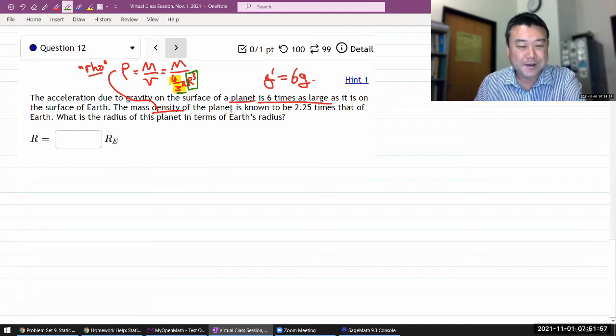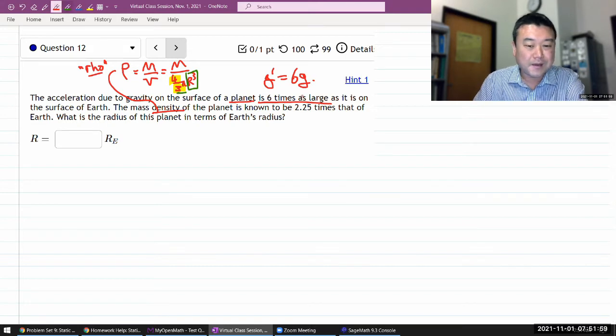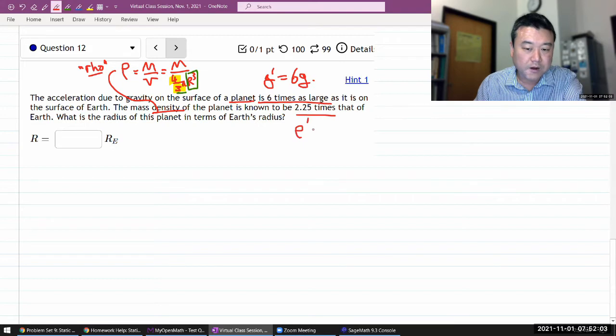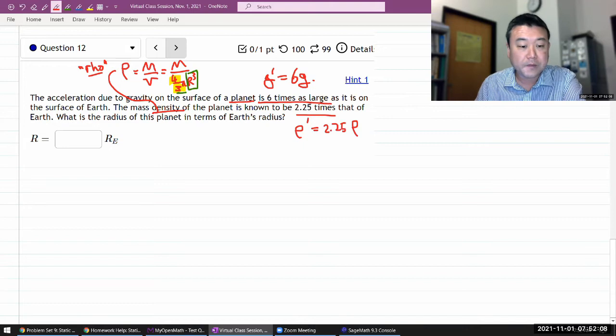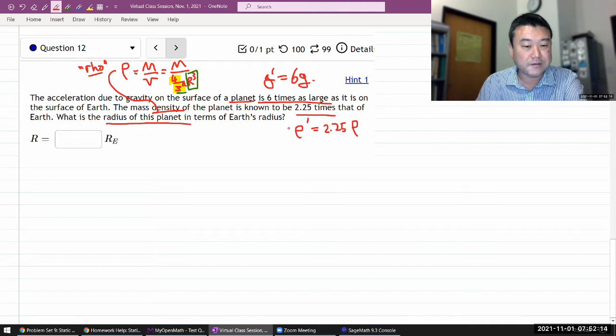The mass density of the planet rho prime is equal to 2.25 times the density of Earth. It's asking what is the radius of the planet in terms of the Earth's radius.